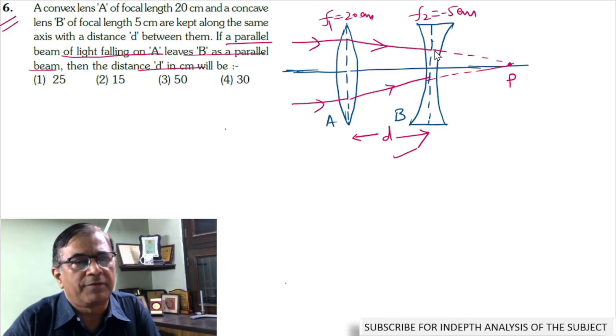According to the problem, after refraction from the concave lens, rays again become parallel to the principal axis as shown over here.